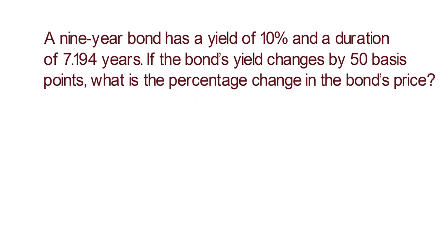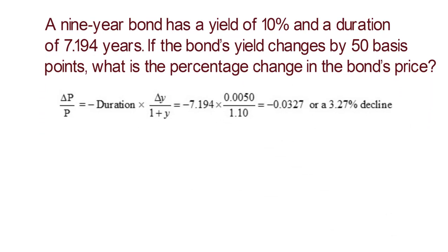we get percentage change in bond price equals negative 7.194 times 0.005 divided by 1.1 equals negative 0.0327 or a